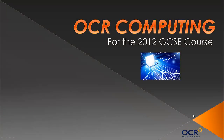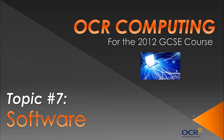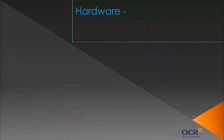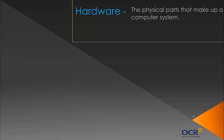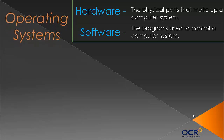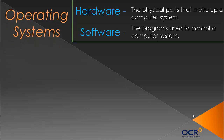Hello and welcome to topic number seven of the OCR GCSE Computing course. We're looking at software today. The last five or six videos have all been about hardware, and today we're cramming everything into one video about software, following the specification as it lists it. Hardware is the physical parts that make up a computer system. Software are the programs used to control a computer system.